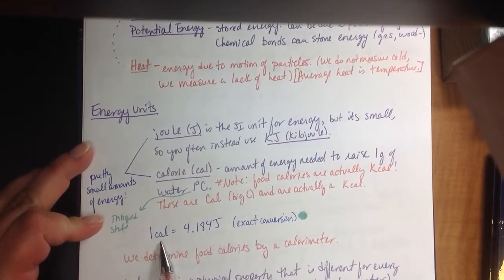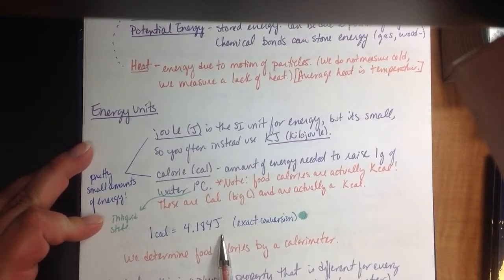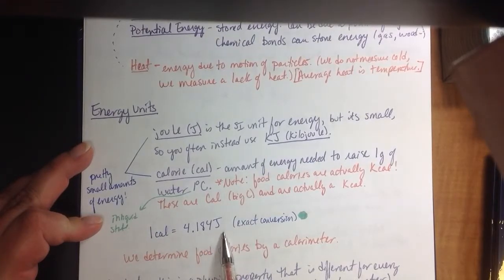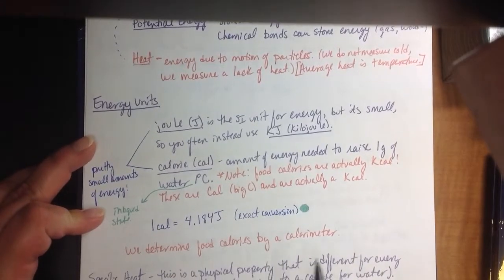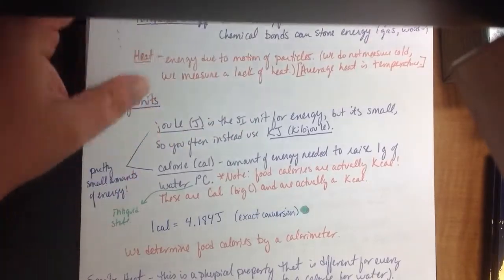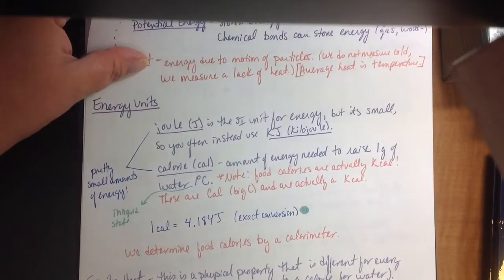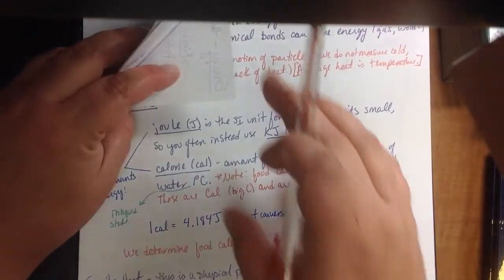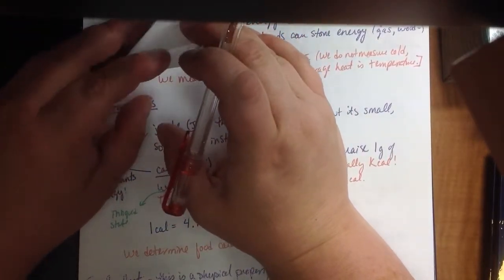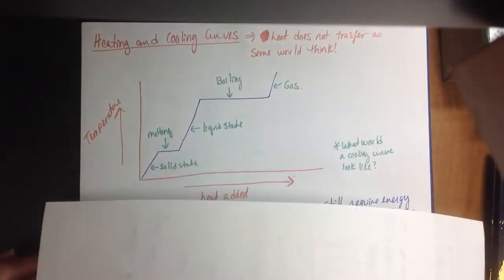One calorie is 4.184 joules. So see how small these joules are? Those are really, really small. You can determine these things by what's known as a calorimeter, and that's how they are determined usually. Now let's get into some math. Before I even get into math, I want to show you all a diagram, and I'm going to skip ahead of my notes to show you this. Because I think it's important to know where we're headed and what this means.